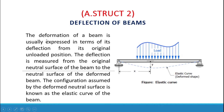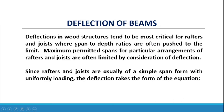Deflection of beams: the deformation of a beam is usually expressed in terms of its deflection from its original unloaded position. The deflection is measured from the original neutral surface of the beam to the neutral surface of the deformed beam. The configuration assumed by the deformed neutral surface is known as the elastic curve of the beam.